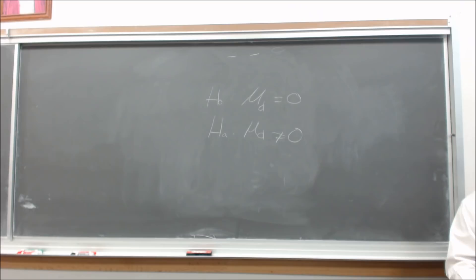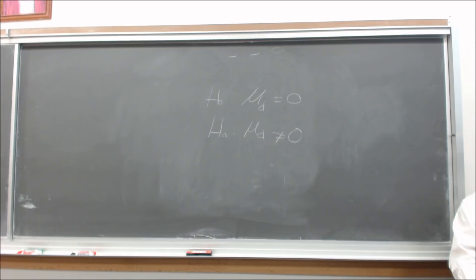Part F: Compute the p-value and compare it to the alpha level. Our p-value is 0.25 and our alpha level is 0.05, so our p-value is greater than our alpha level. Part G: Make a decision — do you reject the null hypothesis or fail to reject? Since the p-value is greater than alpha, we fail to reject the null.